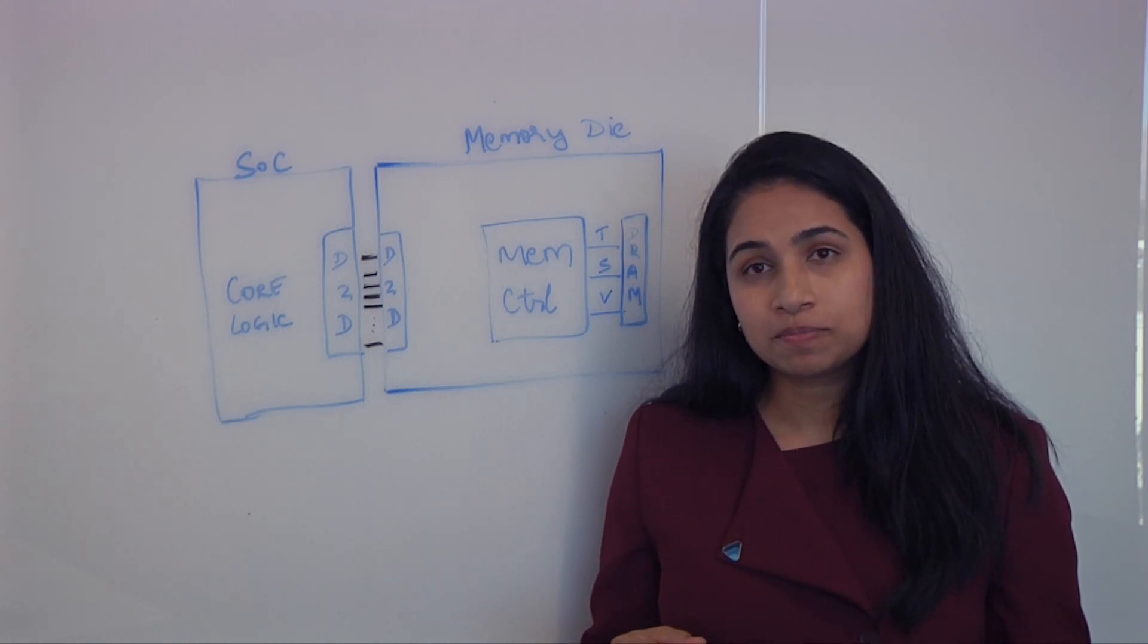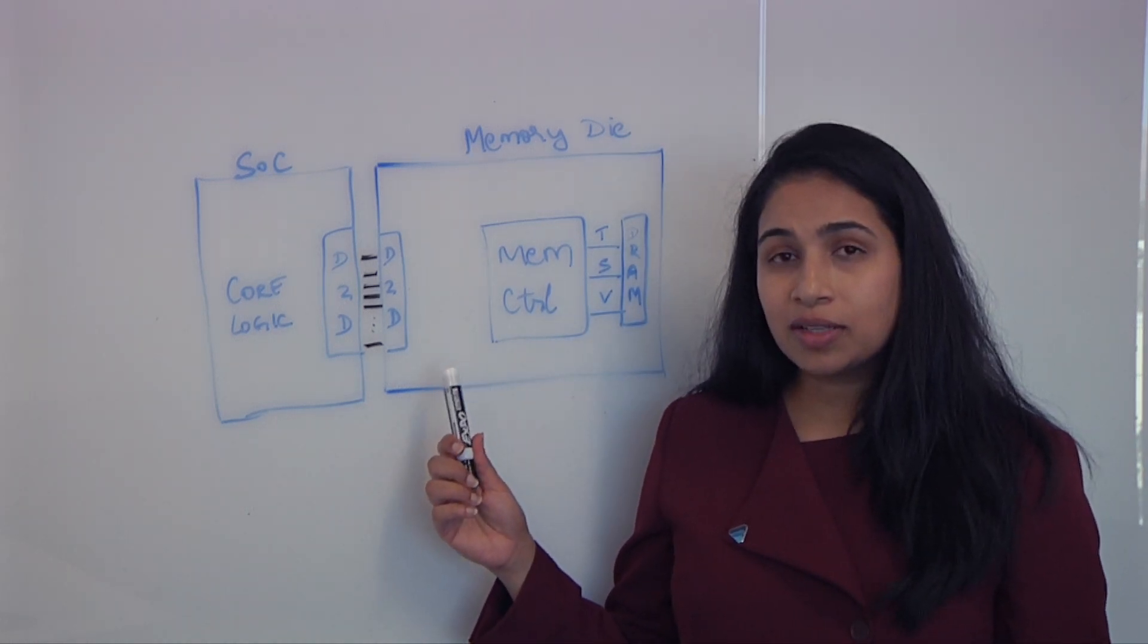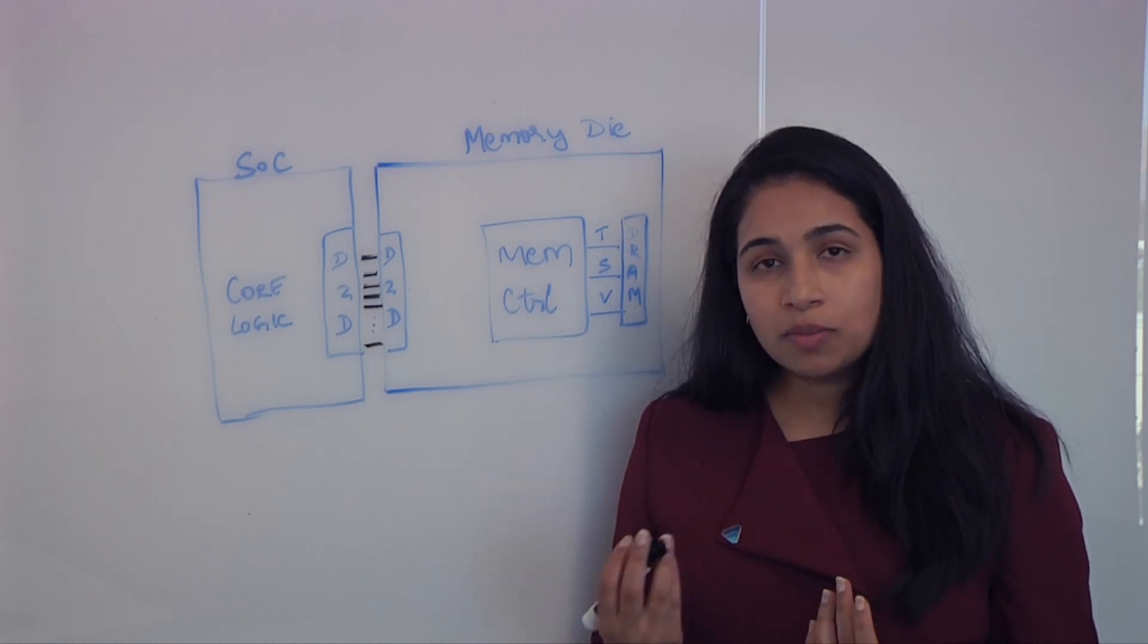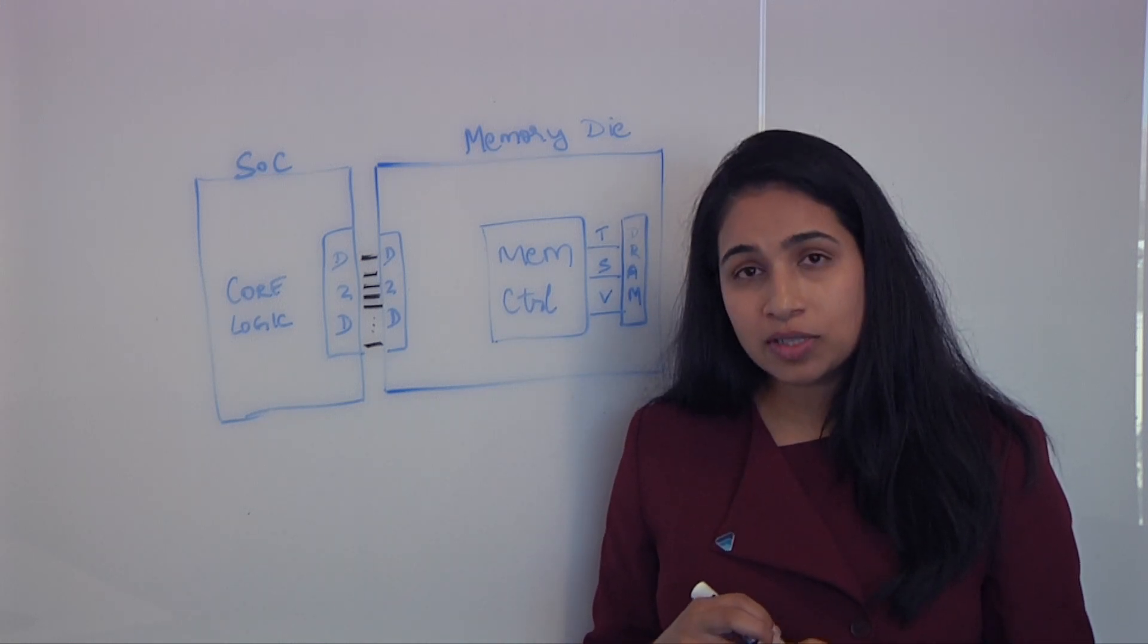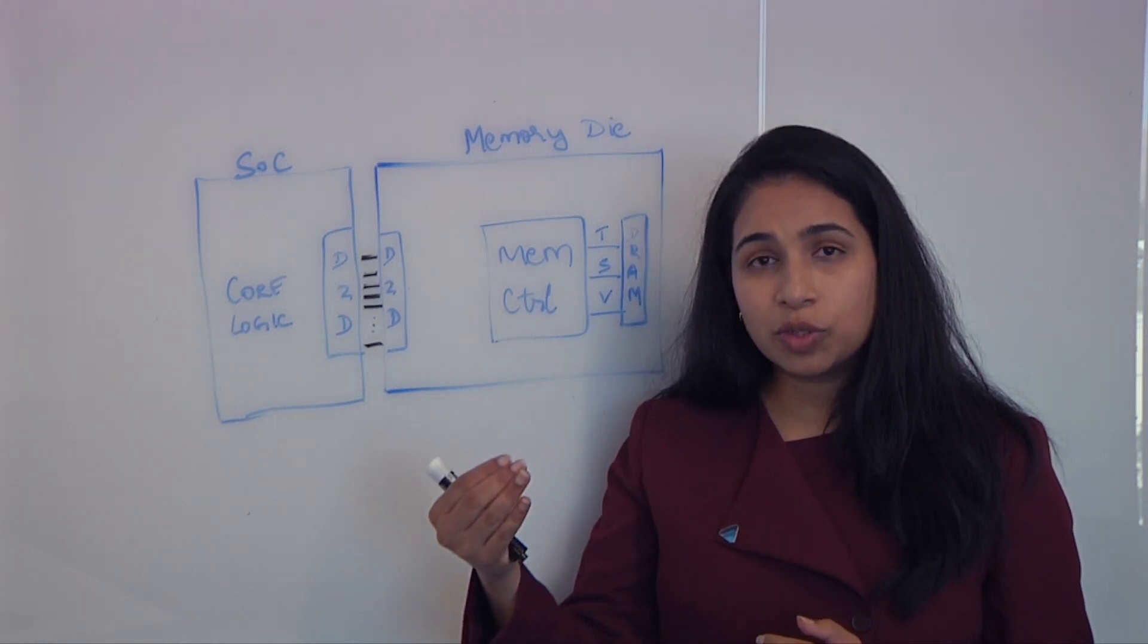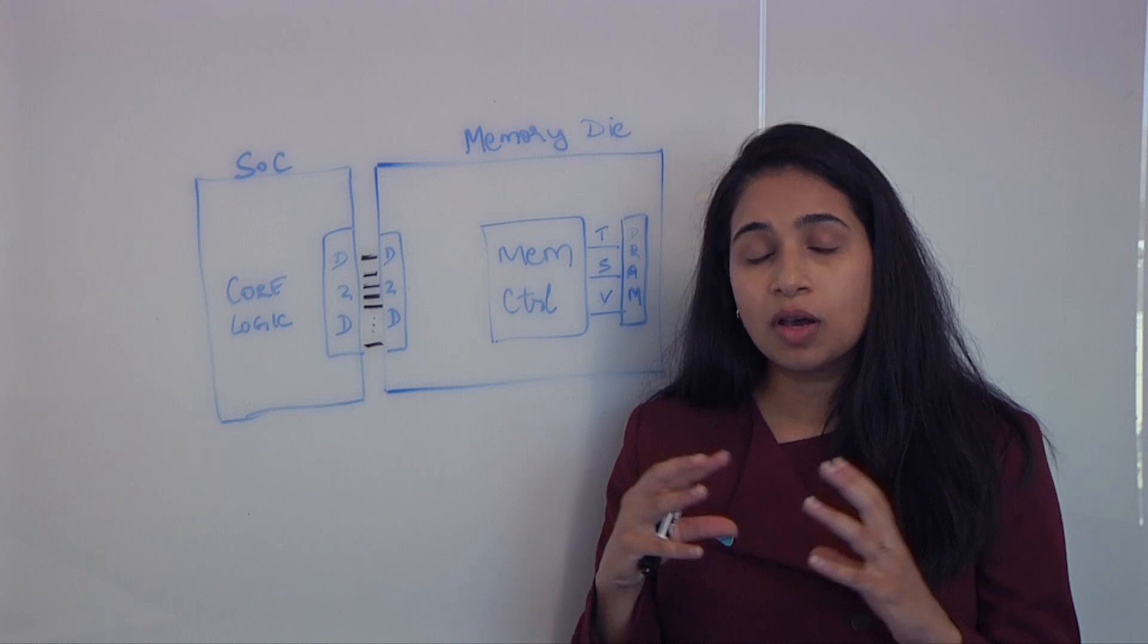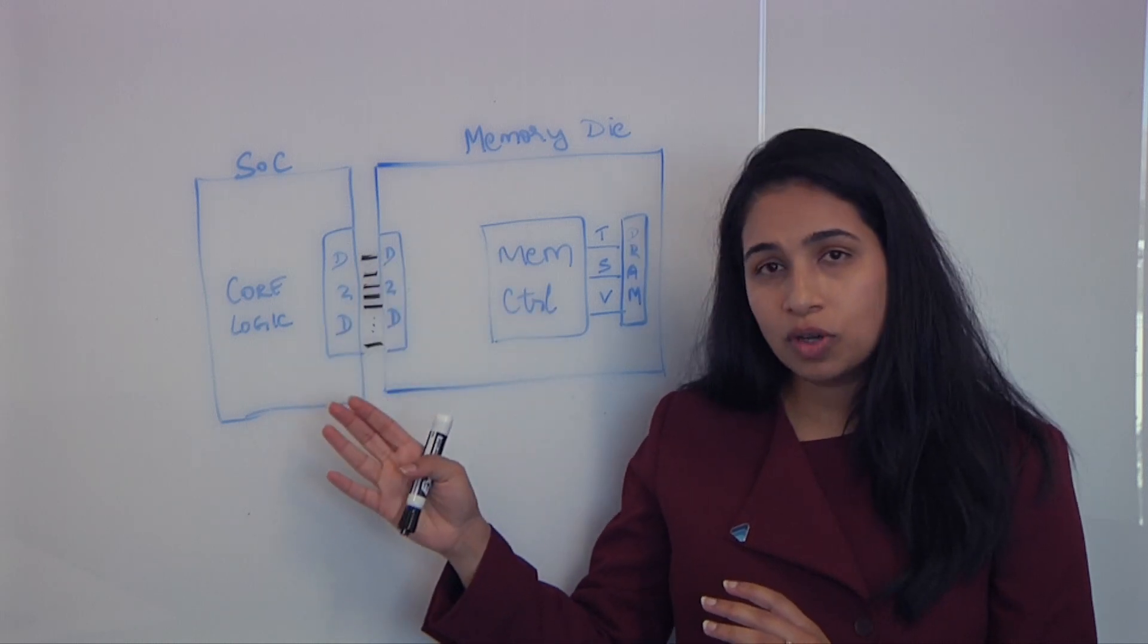So now the question is, how do you move the data faster in and out? So one way we can do this is using a die-to-die interface. So today the UCIe is a very popular die-to-die interface that is introduced into the industry. It can operate all the way up to 24 gigabits per second. AlphaWave Semi has recently announced our availability of 24 Gbps UCIe in three nanometer process. And going forward, we're also seeing the trend moving up to 32 Gbps and up to 36 Gbps.